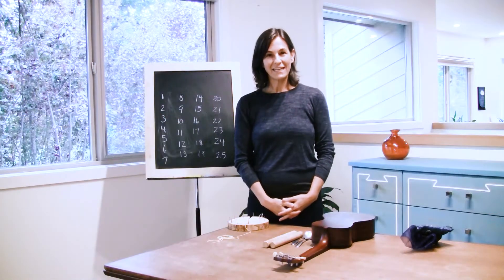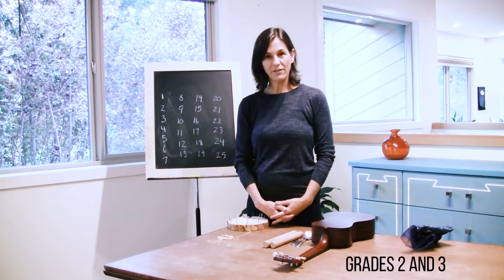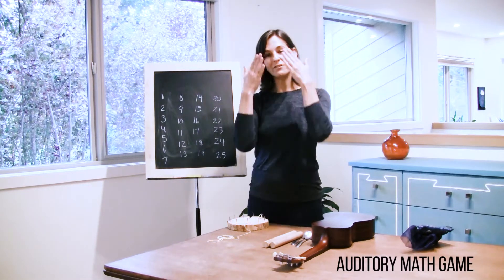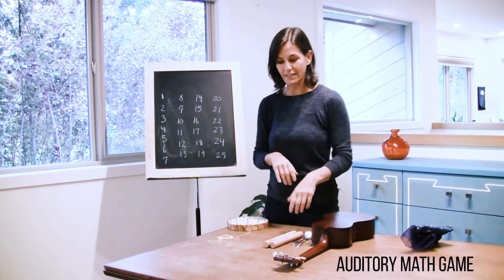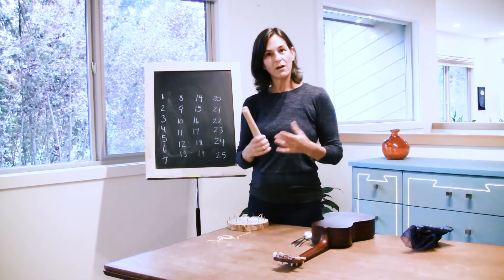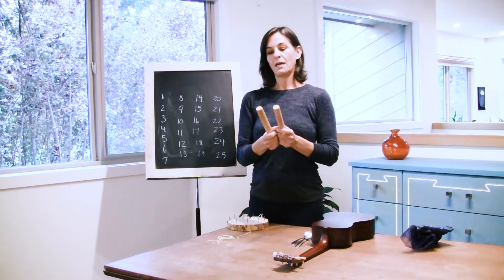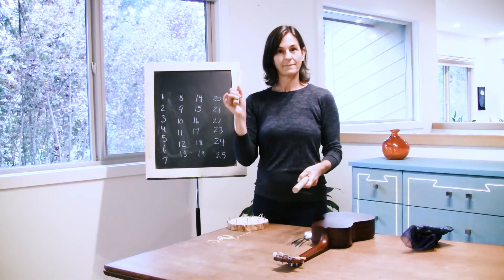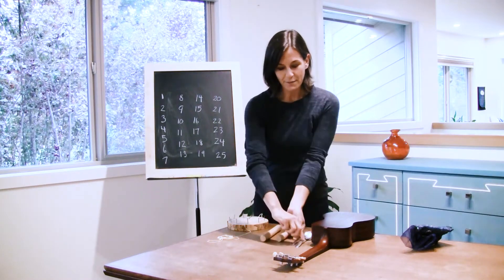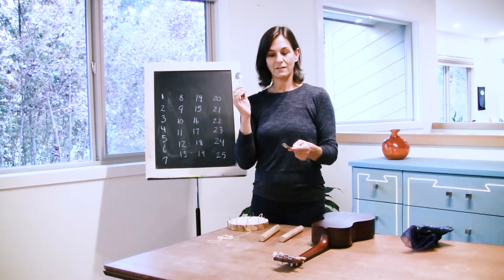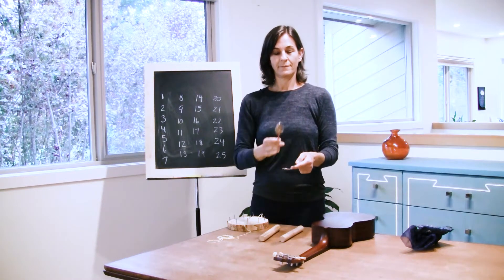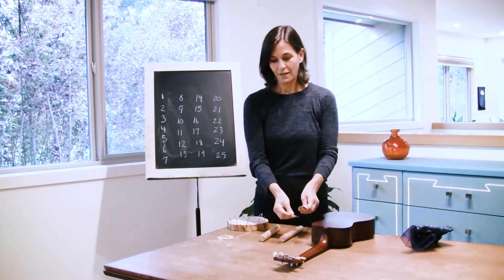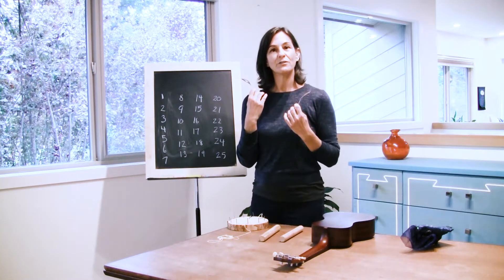This is a really fun activity that you can do with your child in grade two or three once they've learned the concept of place value. It's an auditory math game, so your child is going to close their eyes and listen really carefully. You can find three different sounding objects in your house. For my purposes I'm using wooden sticks to count as units — so if I tap, that counts as the number three. I'm using spoons to count by tens — so that would be ten, twenty, thirty. Together I could come up with the number that I want my child to calculate in their head.